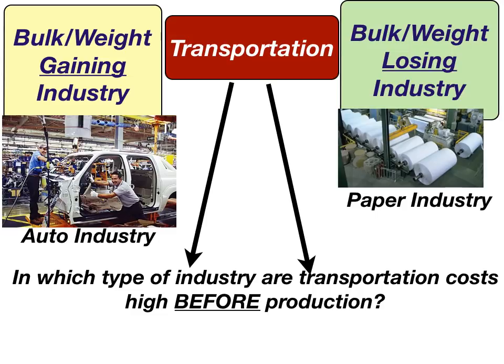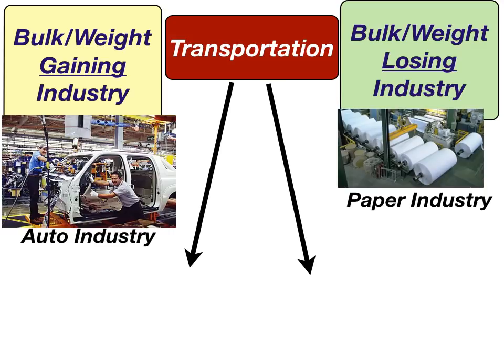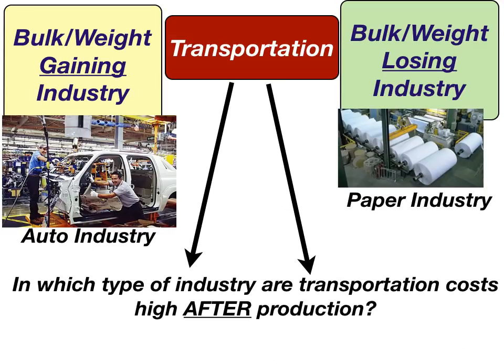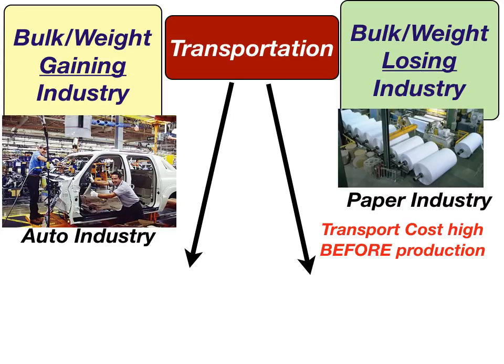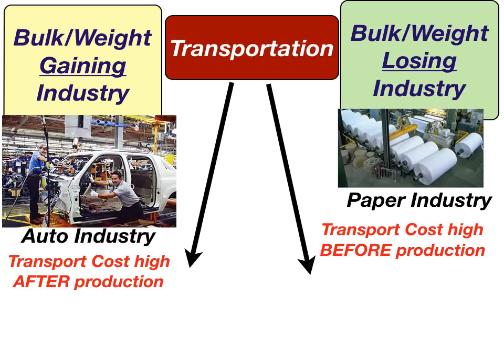In which type of industry are transportation costs high before production? That's the type where the raw materials are very heavy — a bulk or weight losing industry. In which type are transportation costs high after production? That's where the final product is a lot heavier than the parts — a bulk or weight gaining industry.